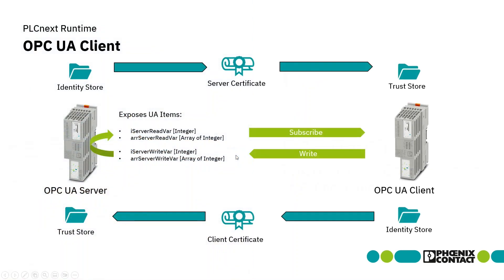In my previous video I already introduced the process of how you can establish a connection from an OPC UA client to one OPC UA server. In that scenario it was a second PLCnext control. I implemented a round-trip and already showed the handling of certificates. This tutorial is based on the previous one — if you haven't seen it before, please do.